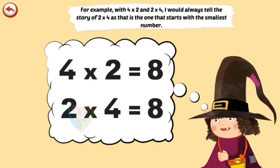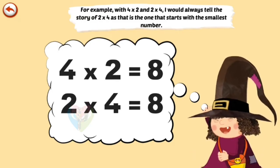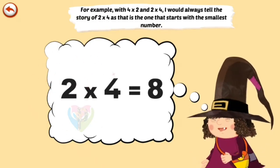For example, with 4 times 2 and 2 times 4, I would always tell the story of 2 times 4, as that is the one that starts with the smallest number.